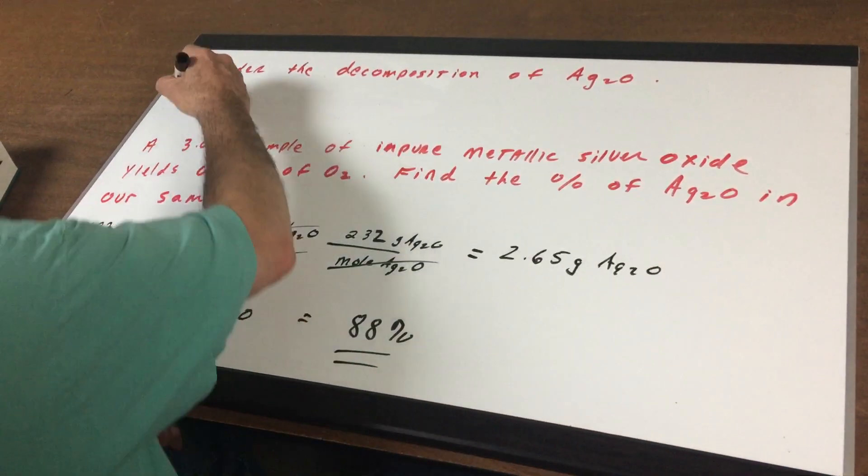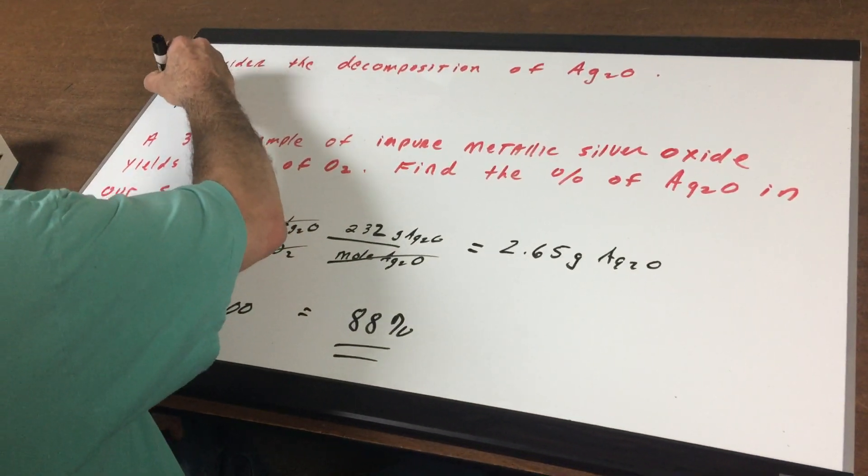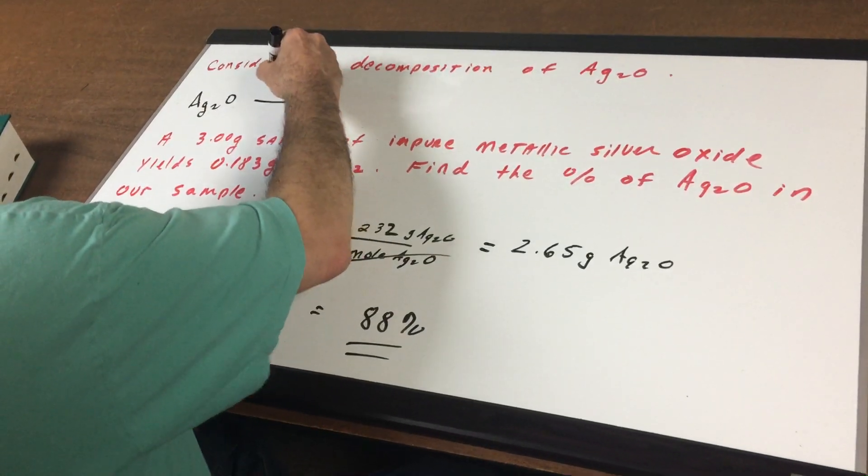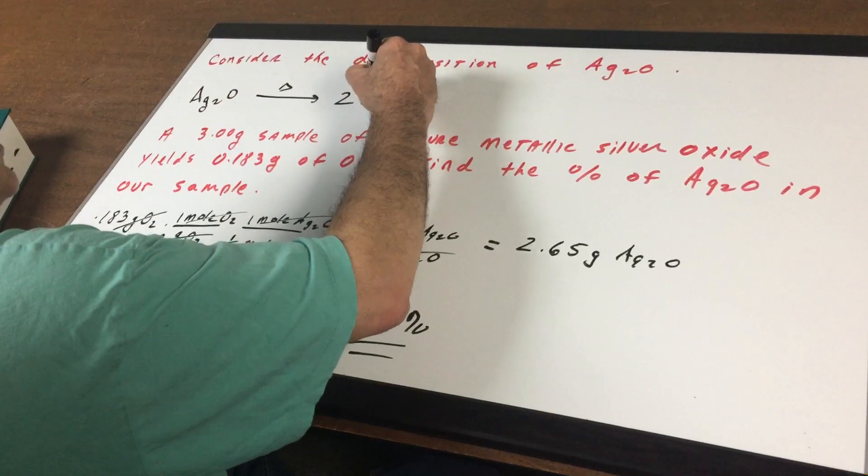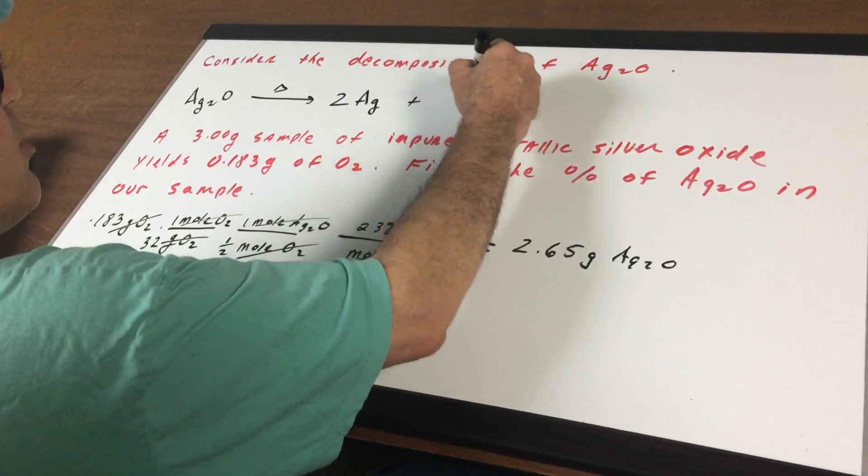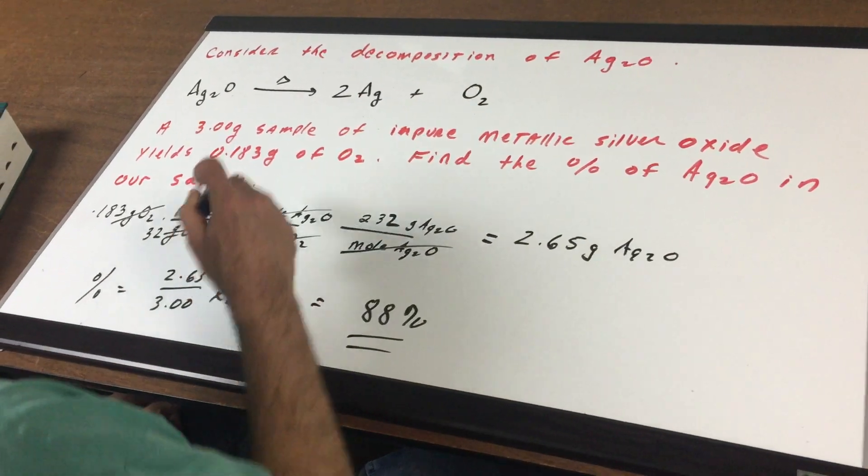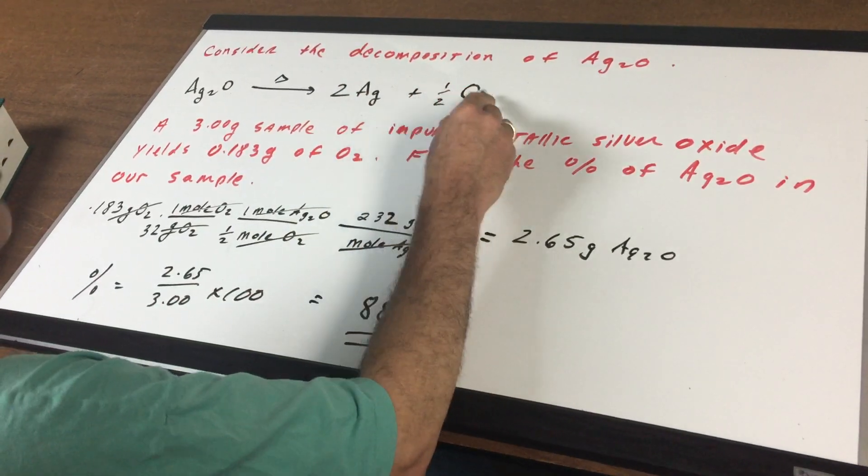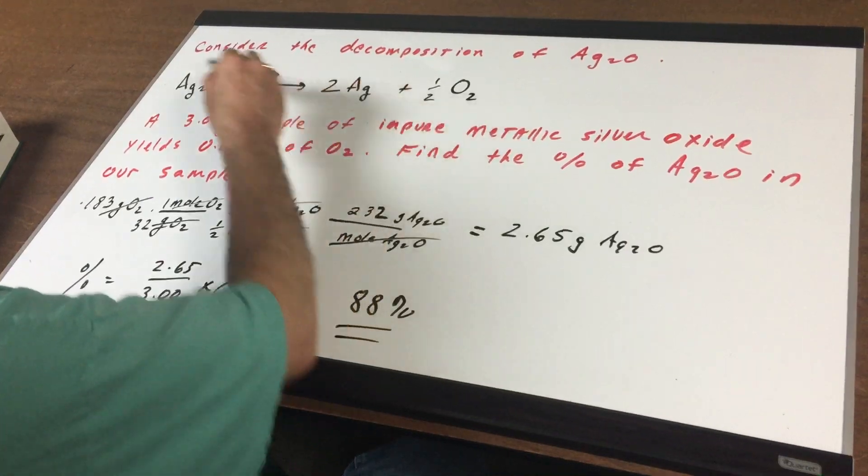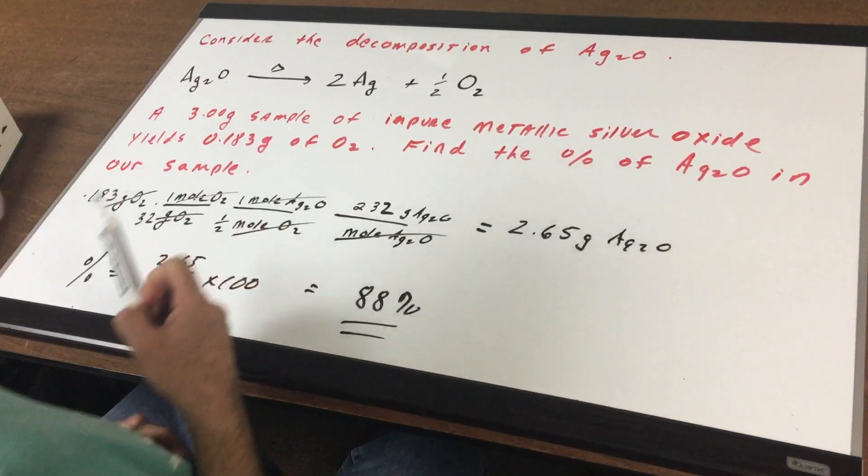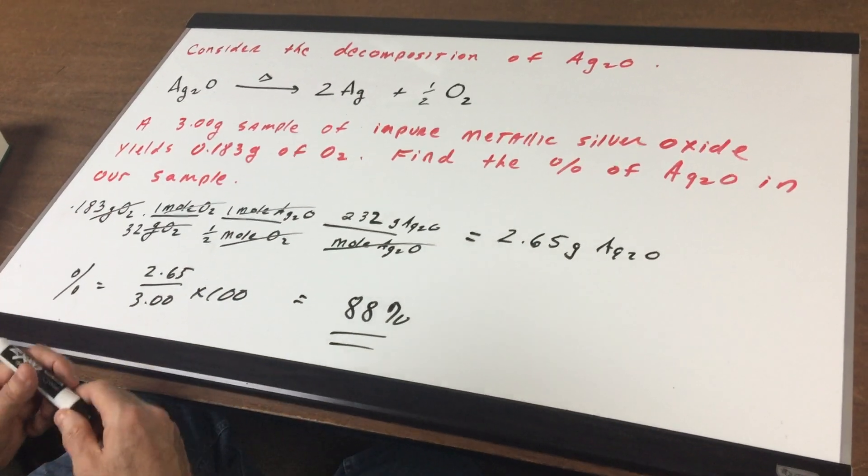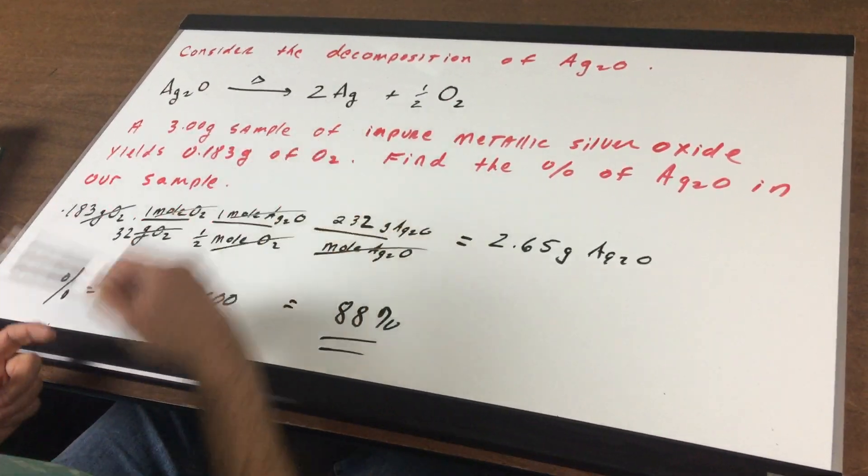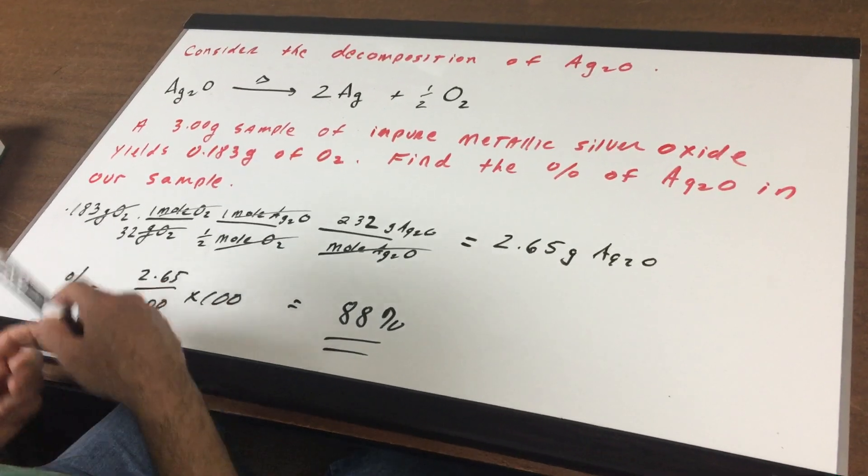The first thing we need to do is write out the reaction. So we're going to take Ag2O and heat it, and we're going to end up with two silvers plus oxygen. And we all know oxygen is diatomic. So to balance it, I need to put a half here. A half times two is one. There's one oxygen, two silvers, two silvers. So that was the first thing you have to be careful of. And it's perfectly acceptable. I don't know why teachers don't like fractions on compounds. That's perfectly acceptable to put a half.